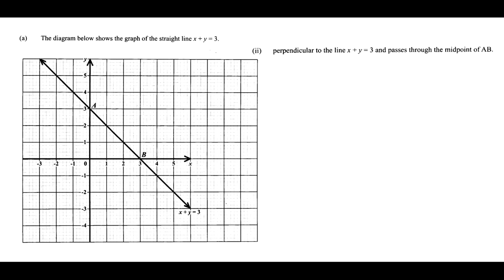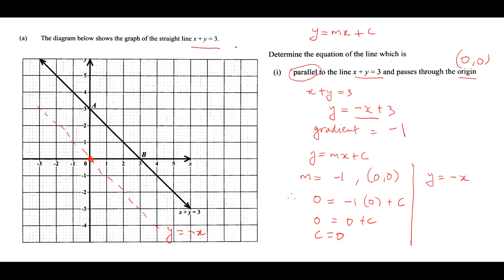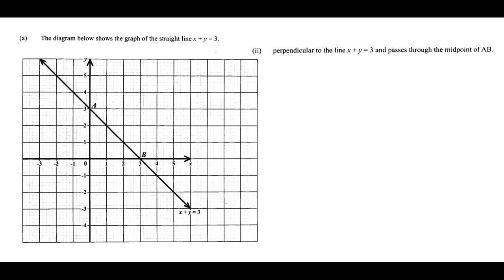For part 2, we need the equation of the line that is perpendicular to x plus y equals 3 and passes through the midpoint of AB. The midpoint of AB lies somewhere on the diagram — let's call it M. That's the first thing we need to find.